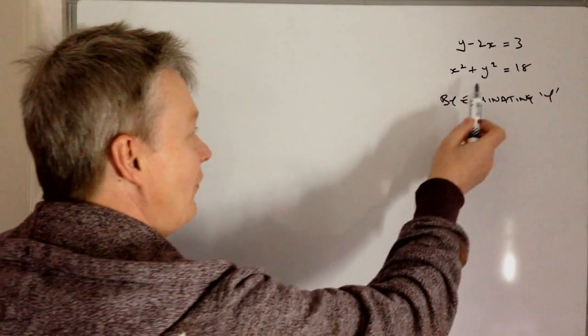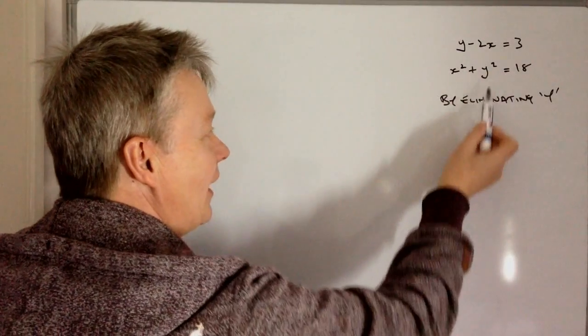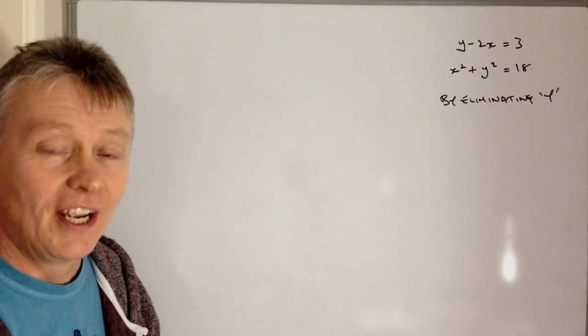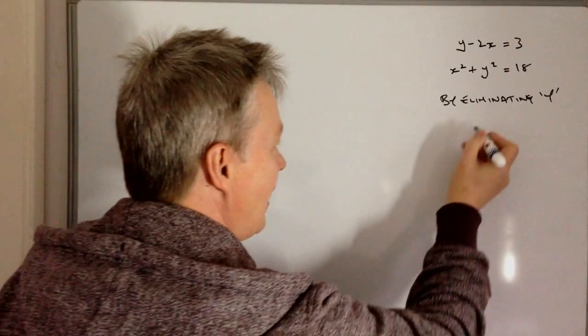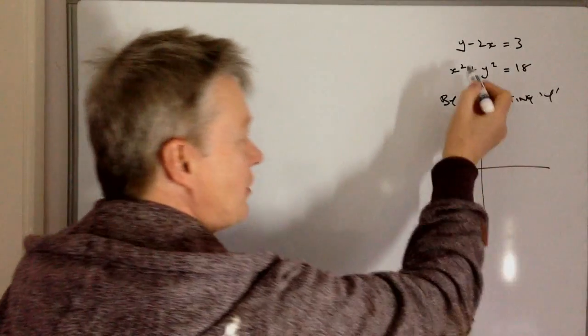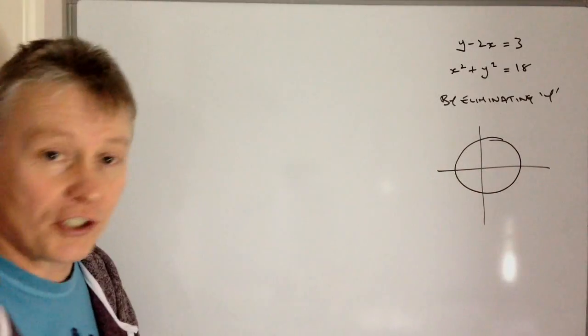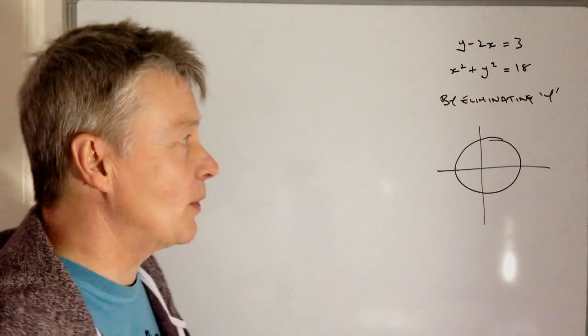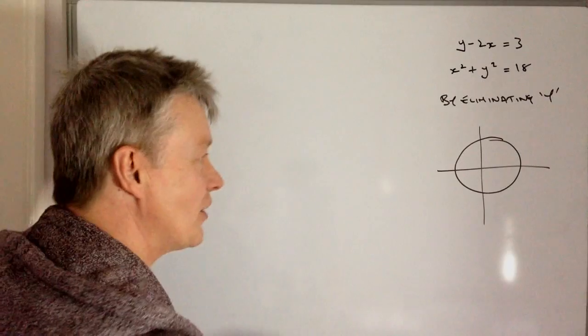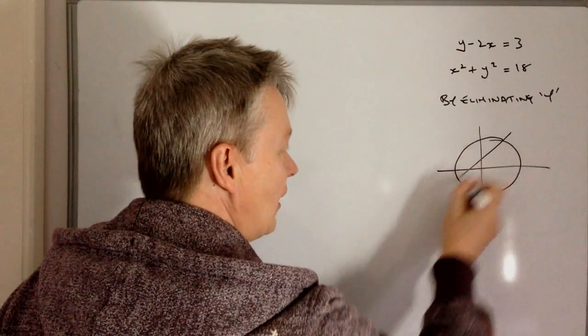We're going to use this particular value of y here and put it into this equation. If you can imagine, this is the equation for a circle, so x squared plus y squared equals 18 is a circle, and then this is a straight line.